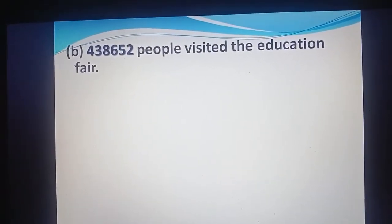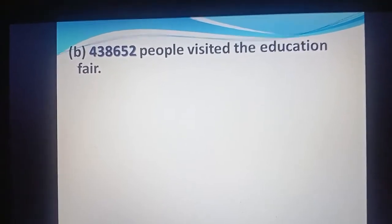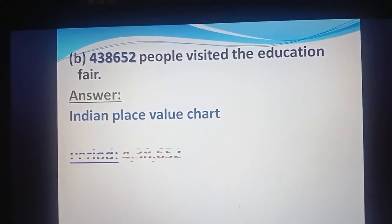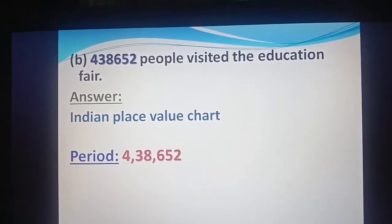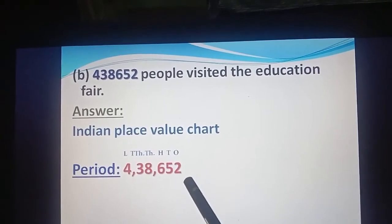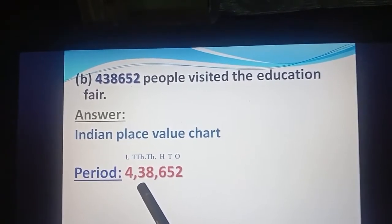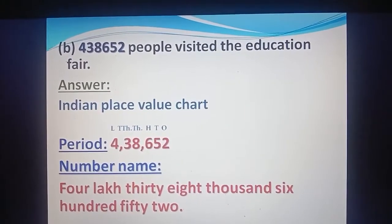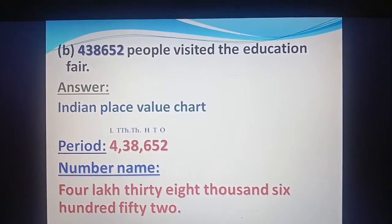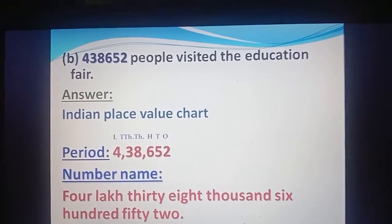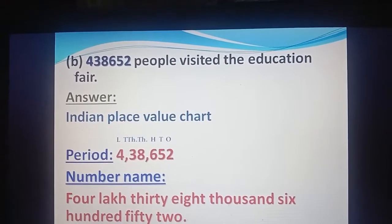Now come to B part: 438652 people visited the education fair. We write the number name using the Indian place value chart and divide according to its period: 4,38,652, and assign places — ones, tens, hundred, thousand, ten thousand, and lakh. So its number name is 4,38,652. The answer is: four lakh thirty-eight thousand six hundred fifty-two people visited the education fair.